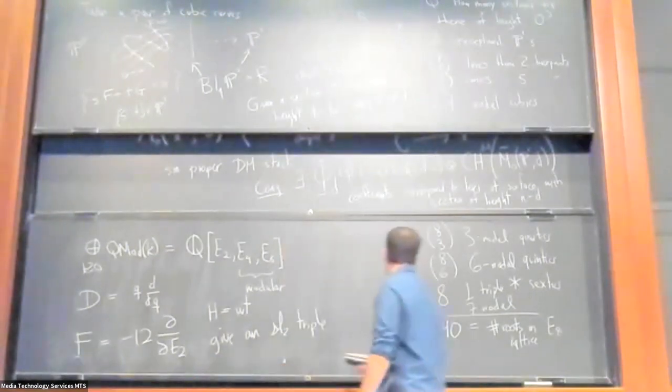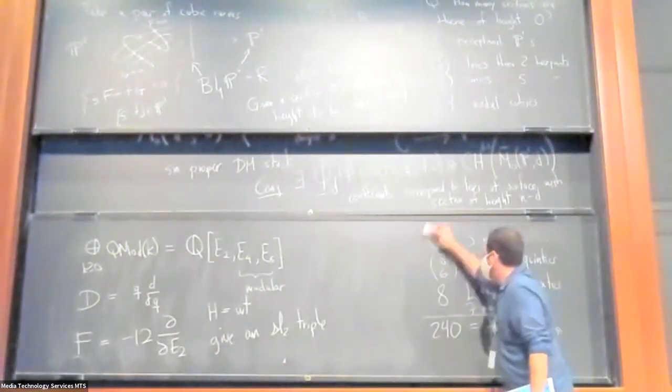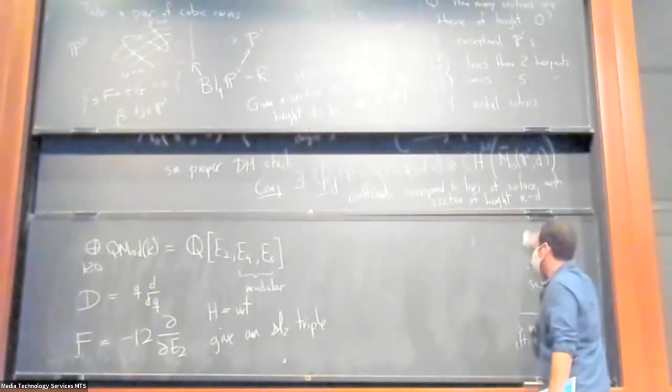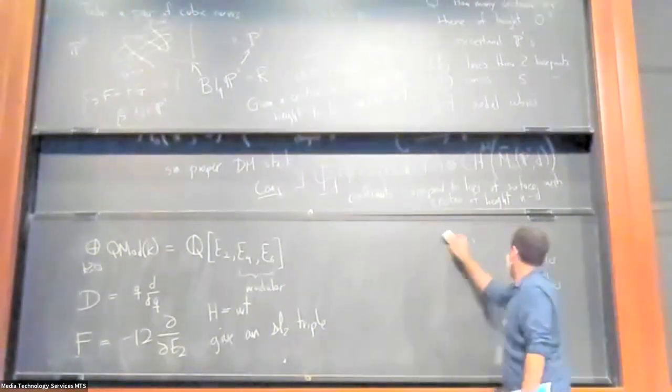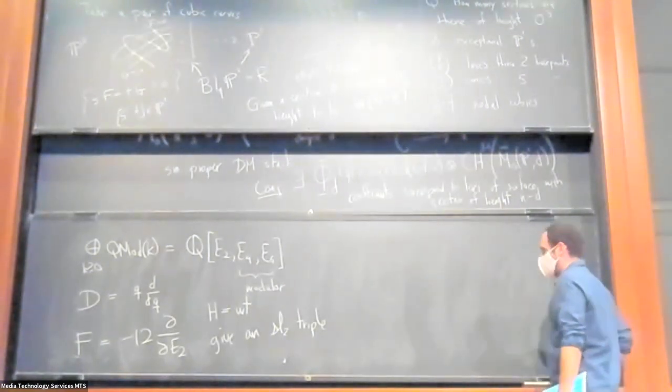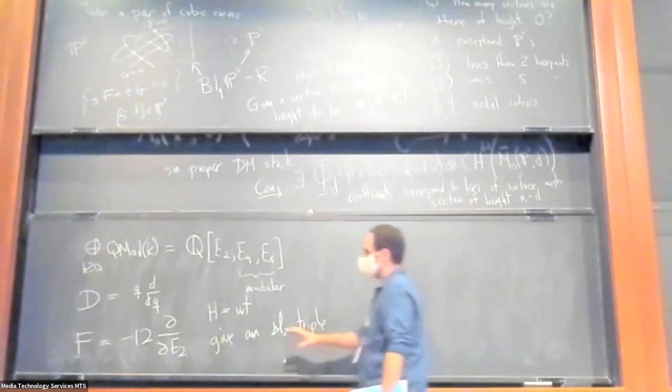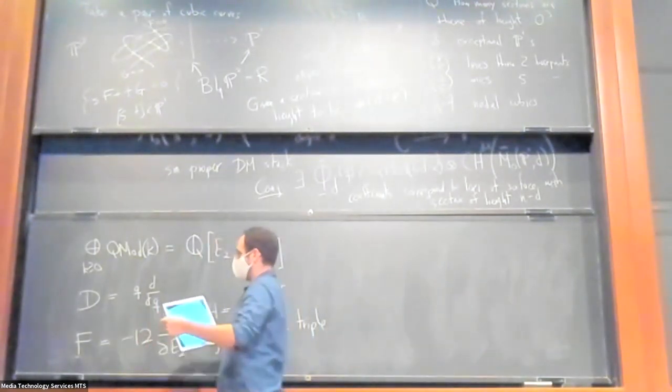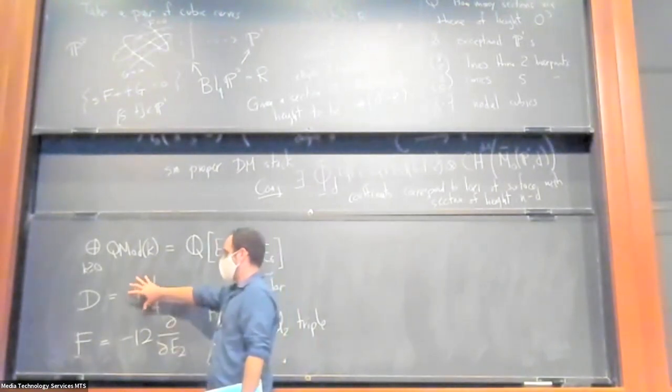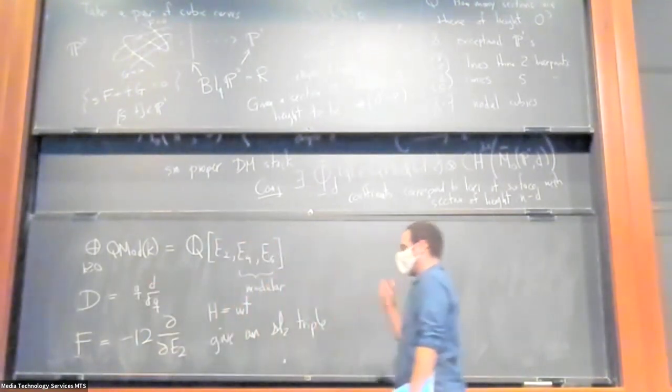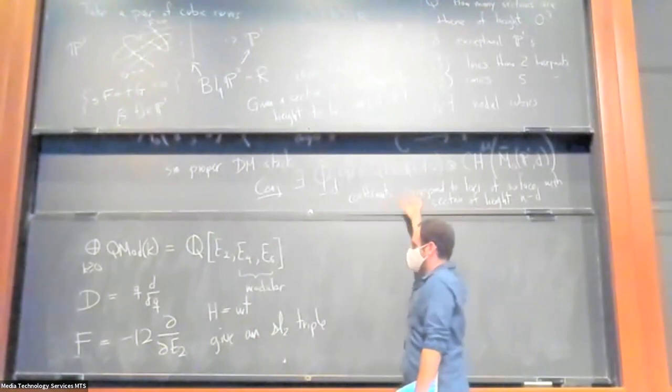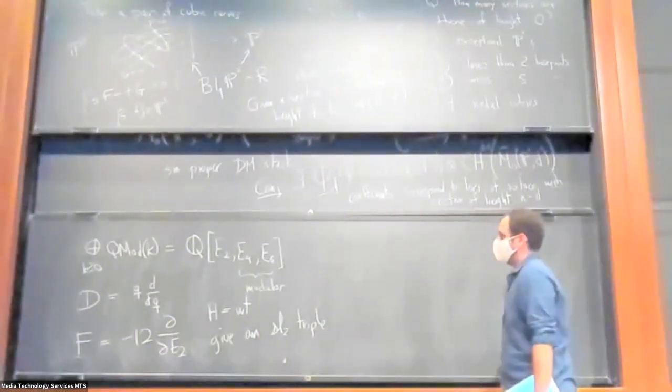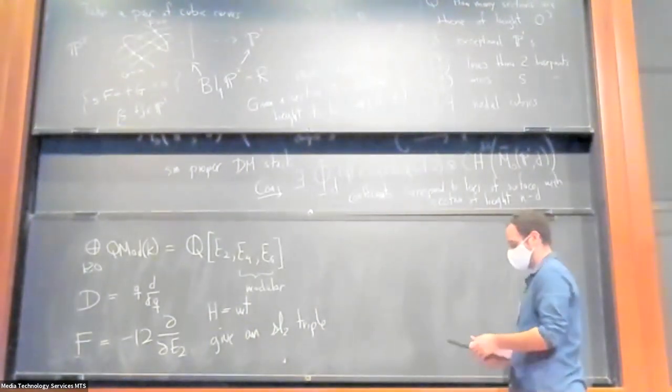And so I won't write down the formula for how this action plays with these quasi-modular forms with cycle valued coefficients. But roughly speaking, what happens is taking the lowering operator breaks the curves apart into smaller degree pieces and taking the raising operator fuses them together. So this is some kind of geometrization of the SL(2) action on quasi-modular forms.